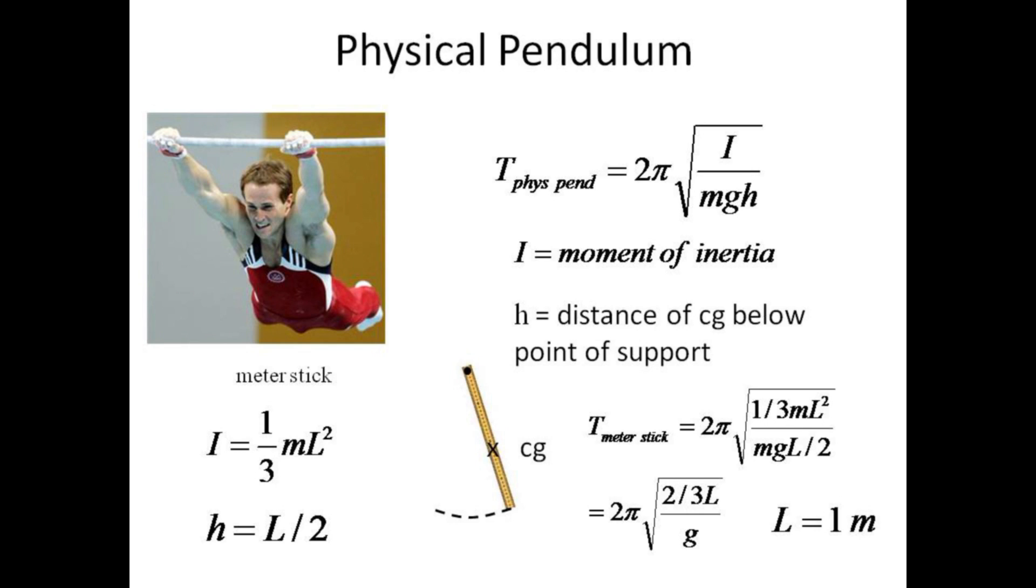The physical pendulum is a solid object rocking back and forth beneath a support. Here the period is equal to 2 pi times the square root of the moment of inertia i over mgh, where h is the distance that the center of gravity hangs below the support.